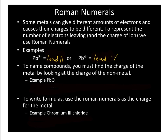Now let's name a compound. We have PbO. We need to figure out the charge on Pb by looking at the charge of the nonmetal. Oxygen is a minus 2 charge. Since Pb and O balance each other out with one of each, two electrons went from lead to oxygen, so lead is plus 2. We use Roman numeral II to indicate that, and the name is lead(II) oxide.